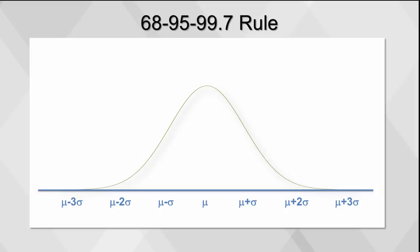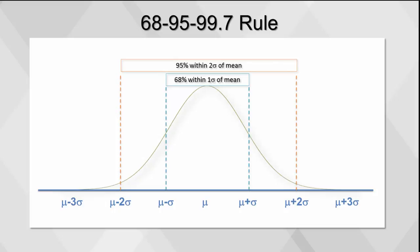The 68-95-99.7 rule states that 68% of the area of a normal curve lies within one standard deviation of the mean, 95% of the area lies within two standard deviations of the mean, and 99.7% of the area lies within three standard deviations of the mean. This rule works for all normal curves, no matter their shape.